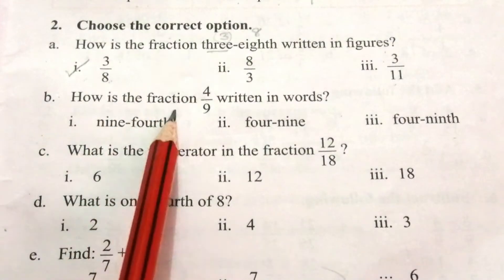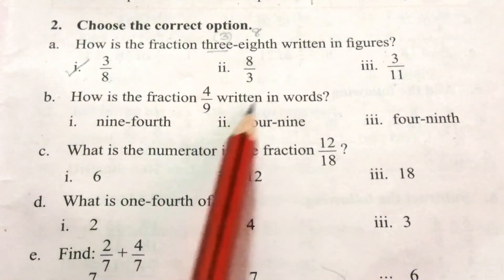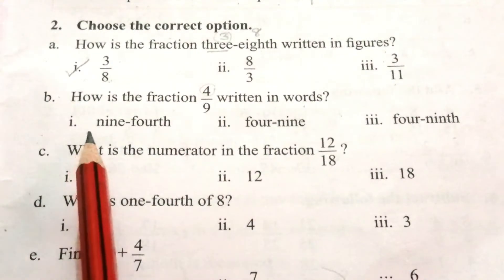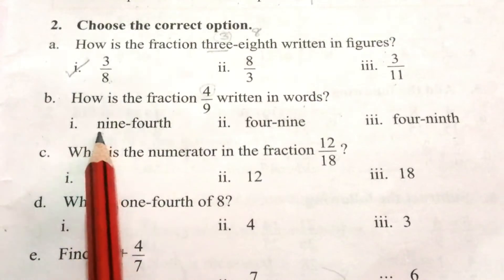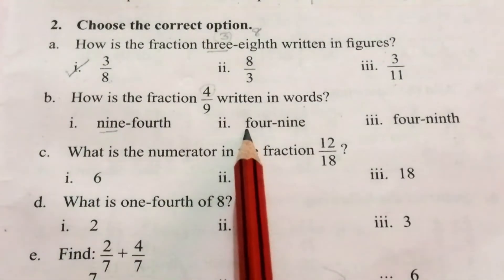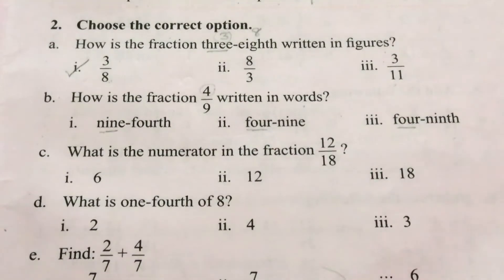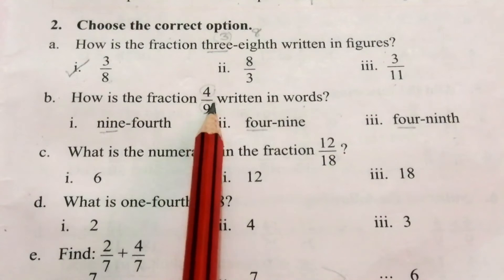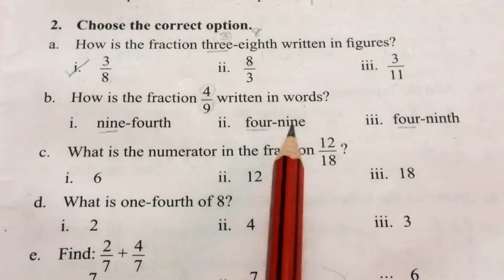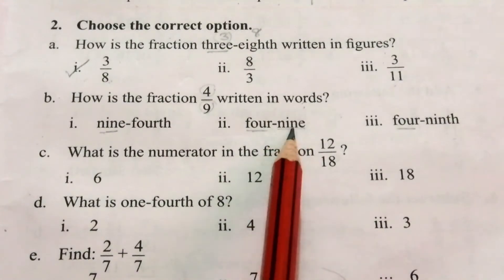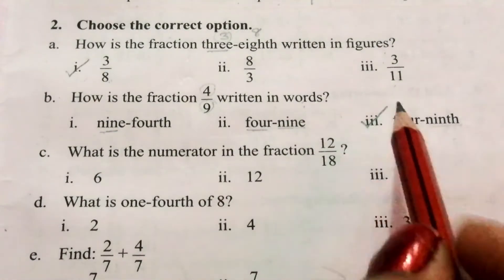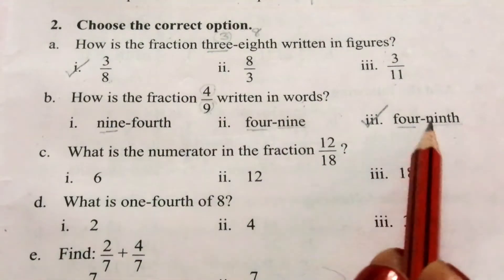Part B: How is the fraction 4 by 9 written in words? The numerator is 4 and the denominator is 9. In words, 9 is written as 9th. So the correct answer is four-ninths.